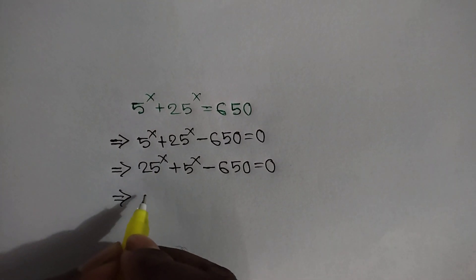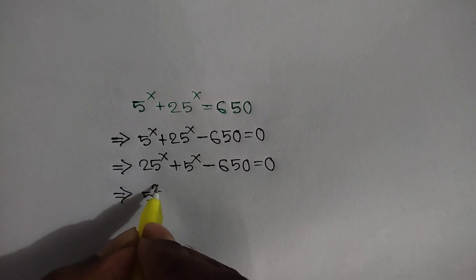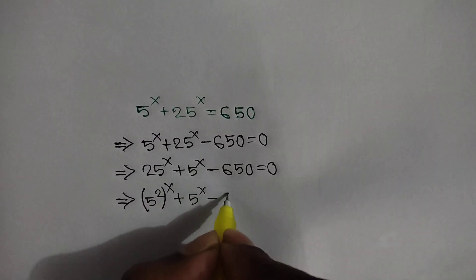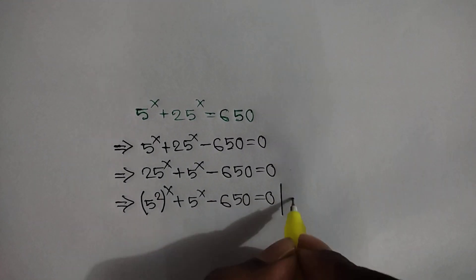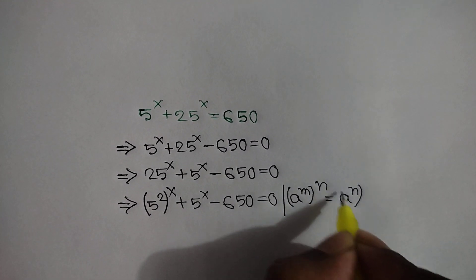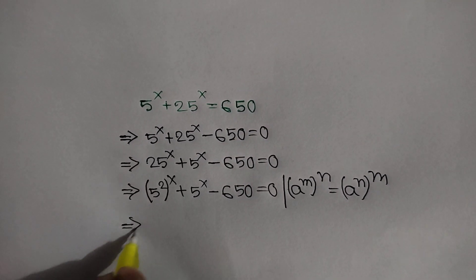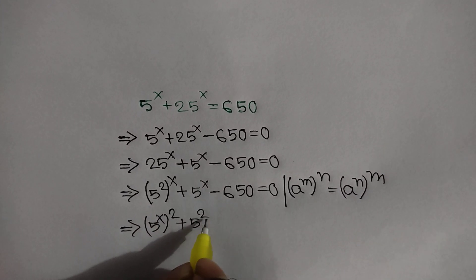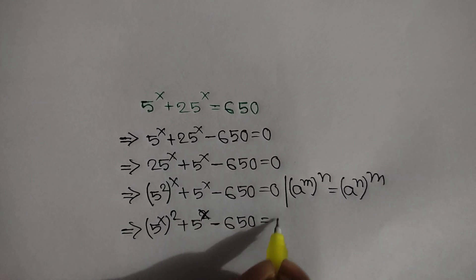Here we can write 25 as 5 squared, because 25 equals 5 squared. So 25 to the power x becomes (5²) to the power x plus 5 to the power x minus 650 equals 0. Here we can apply the rule: a to the power m, whole power n, is equal to a to the power mn. So we can write (5 to the power x) squared plus 5 to the power x minus 650 is equal to 0.